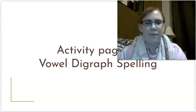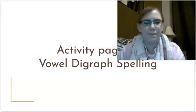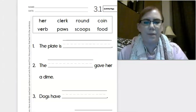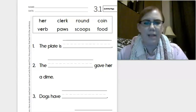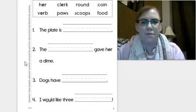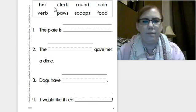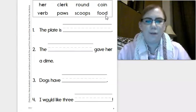Let's go to our activity page in your workbook 3.1 where we'll practice some vowel digraph spelling. Here's what the page looks like. Make sure to write your name and today's date on the top. We're going to find the words that fit in the blank to complete the sentence. Let's read the words in the top box first: her, clerk, round, coin, verb, paws, scoops, food.